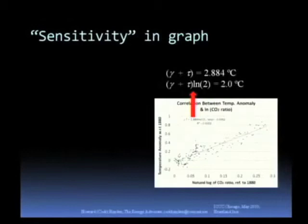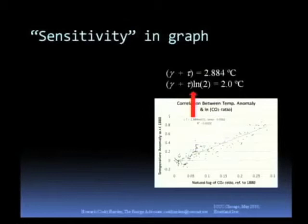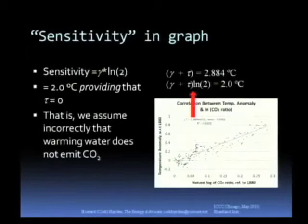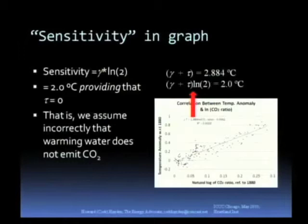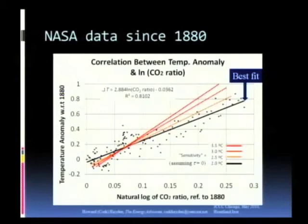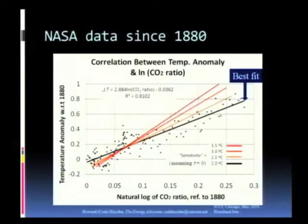Okay? Now, take that graph. Take that 2.884. We have gamma plus tau is 2.884. Gamma plus tau log 2 is 2 degrees Celsius. Which means, now the sensitivity is defined as gamma log 2. And that would be 2.0 providing that tau equals zero. In other words, assuming that warming water does not emit CO2. Well, that's a false assumption. But we are talking about what, I mean, if the IPCC can do things, well, we can make that too. But the upshot of it is that this establishes an upper limit to the sensitivity. Because gamma and tau are both inherently positive. Here's the NASA data shown with the best fit which corresponds to a sensitivity of 2 degrees.